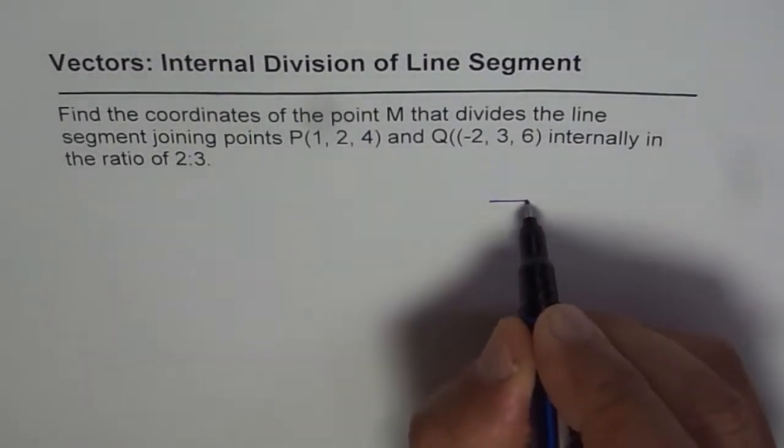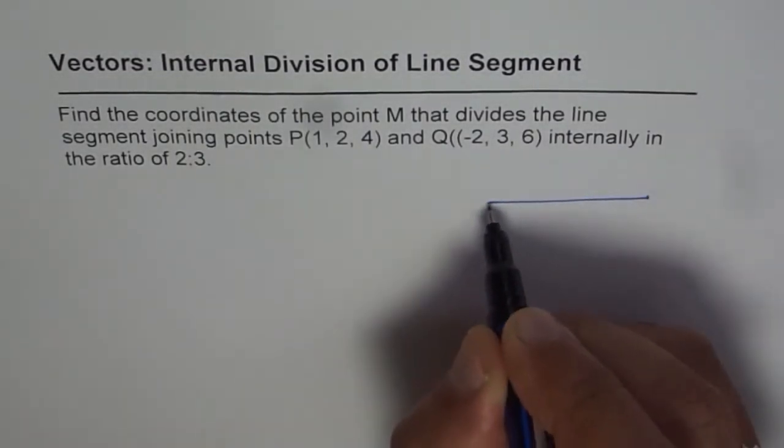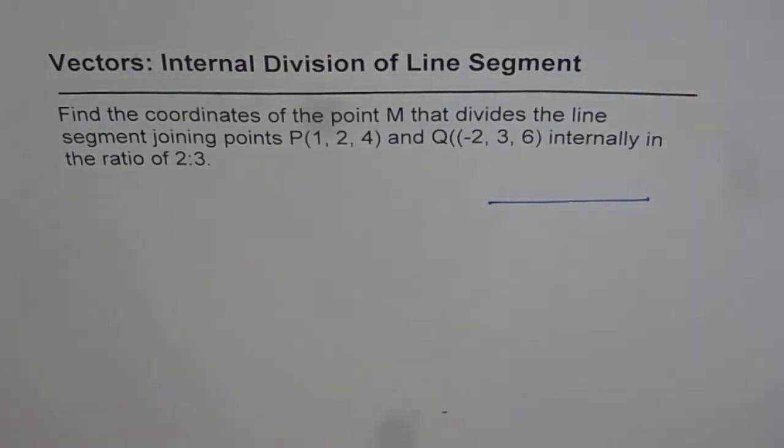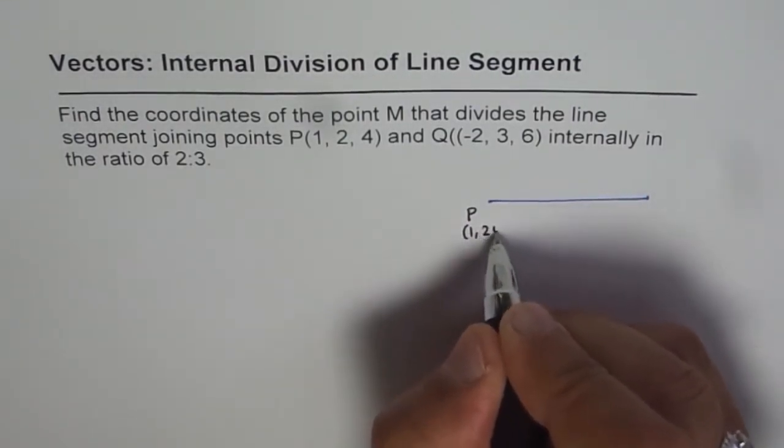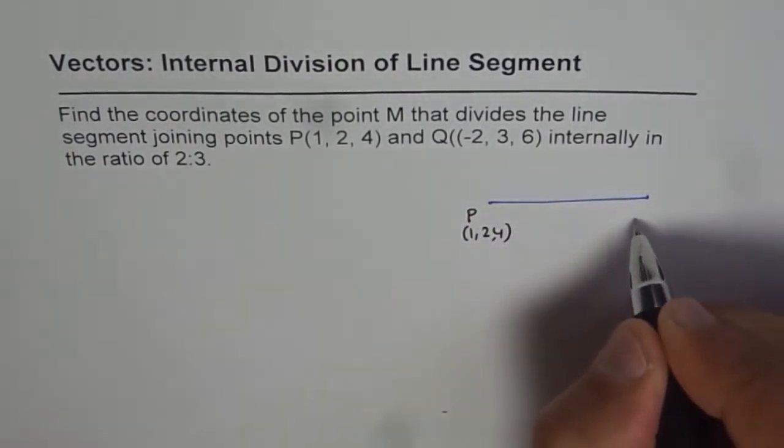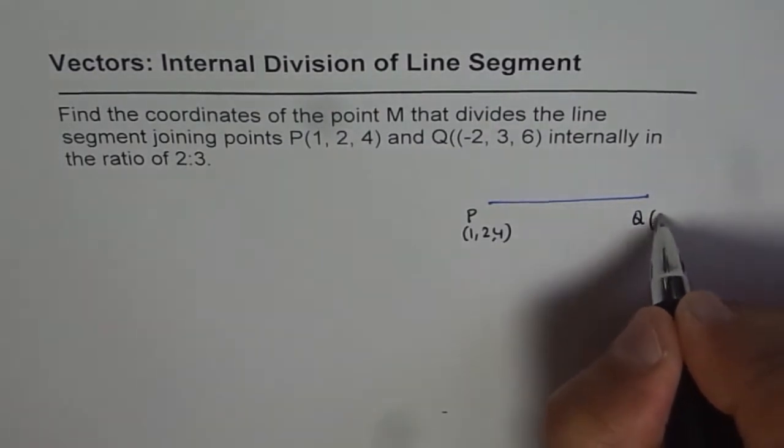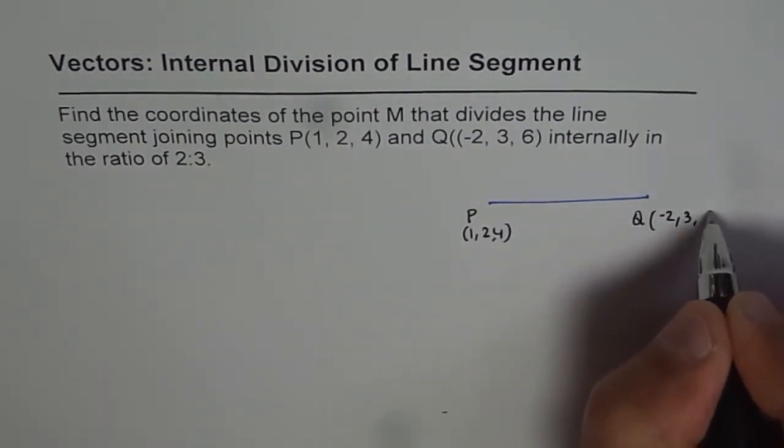So what we are given here is a line segment where point P is (1, 2, 4). Let me mark this point P as (1, 2, 4) and we have point Q here which is (-2, 3, 6).